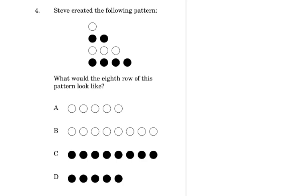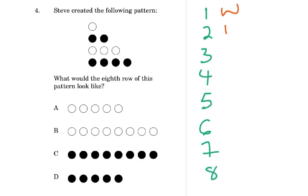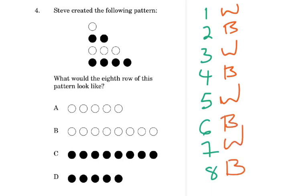Steve created the following pattern. What would be the 8th row of this pattern? We have rows 1, 2, 3, 4, 5, 6, 7, 8 — because we want the 8th pattern. We're going to write it out: white, black, white, black, white, black, white, black, white, black. If you guessed the 9th term would be white — but we don't want the 9th term, we want the 8th term.